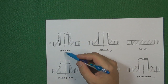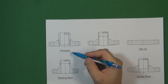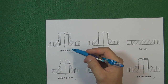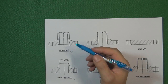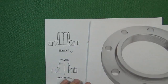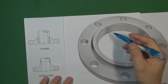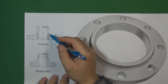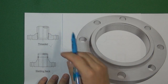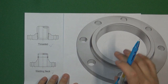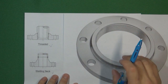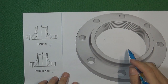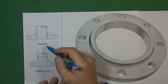The first one is called threaded connection. For threaded connection, we machine a thread inside the flange, and then we machine a thread outside the pipe, and we thread the two pieces together. So this kind of connection we call threaded connection.